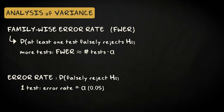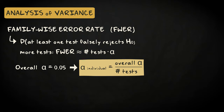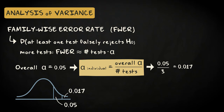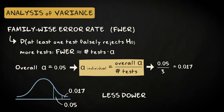If we want to keep the family-wise error rate at the desired significance level of alpha equals 0.05, we could correct for this inflation by dividing the significance level we use for the individual tests by the number of tests. So if we perform three pairwise tests, the individual significance levels would become 0.05 divided by 3, equals 0.017. The p-values for the individual tests are much less likely to be smaller than 0.017 compared to 0.05. In other words, if we apply this correction, we have less power to detect a difference between the groups if there is a true difference in the population.